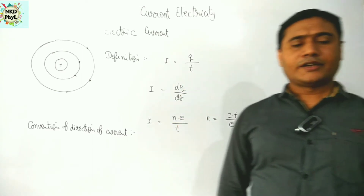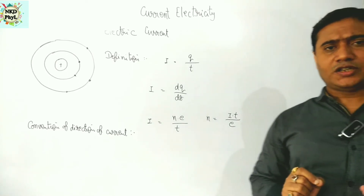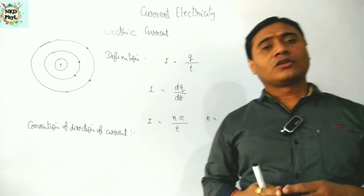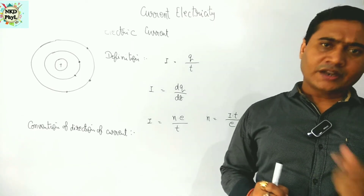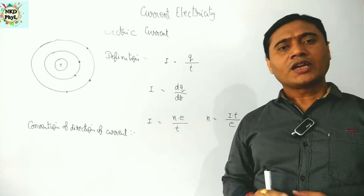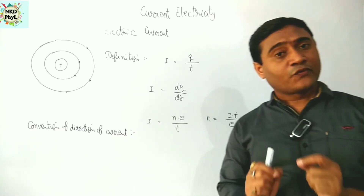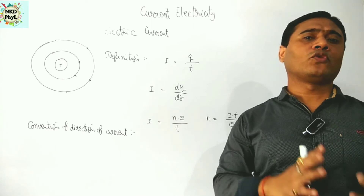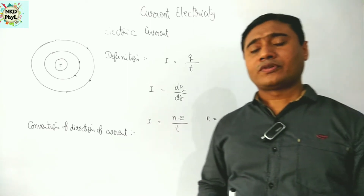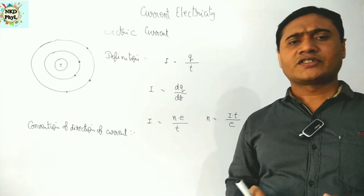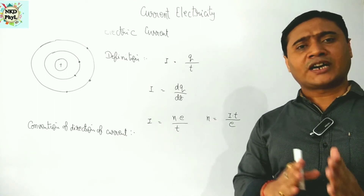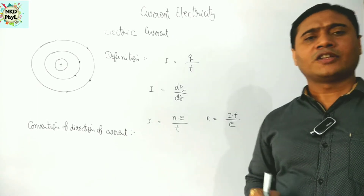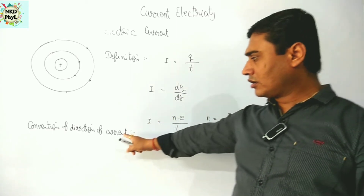For the convention of direction of electric current: in the year 1820, Ampere put forward the convention for the direction of current. He observed that the direction of current is along the direction of flow of positive charges. In case of metallic conductors, the flowing charges are electrons, and hence the current flows in the direction opposite to the direction of flow of electrons. Whereas in case of electrolytes like copper sulfate, NaCl, etc., all positive and negative ions move and hence both participate in the electric current.